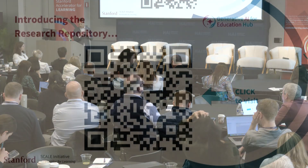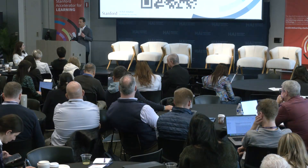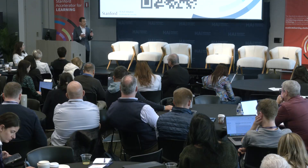Enter the research repository — this is a resource for all of you. Go visit that QR code. It is intended to be the source for all research specifically focused on K-12 as it relates to Gen AI: what we know right now from RCTs, et cetera. It's searchable and filterable. Our target audience is system leaders, superintendents, and state K-12 leaders, but it's also an invaluable resource for product builders, principals, et cetera.